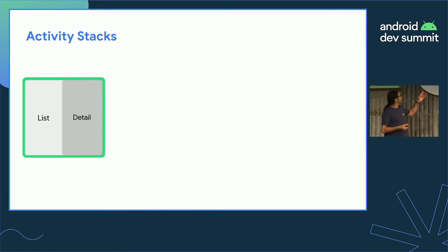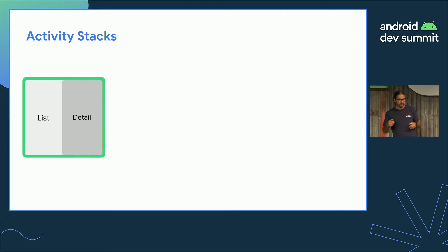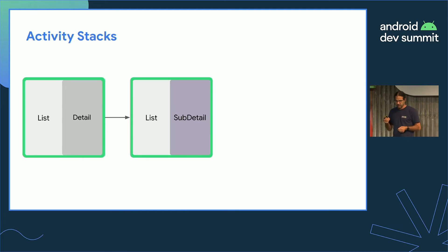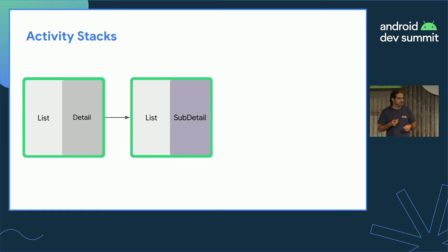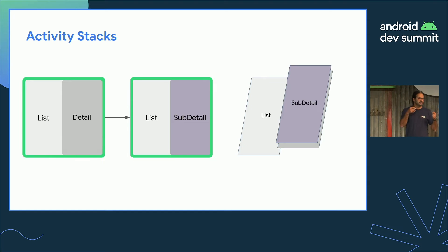Here's an example. Let's say we have an app with a list activity on the left and a details activity on the right. If the user clicks on something in the details activity — the one on the right — which launches a sub-detail activity, when a new activity is being launched, it is automatically bound to the container that it was launched from.